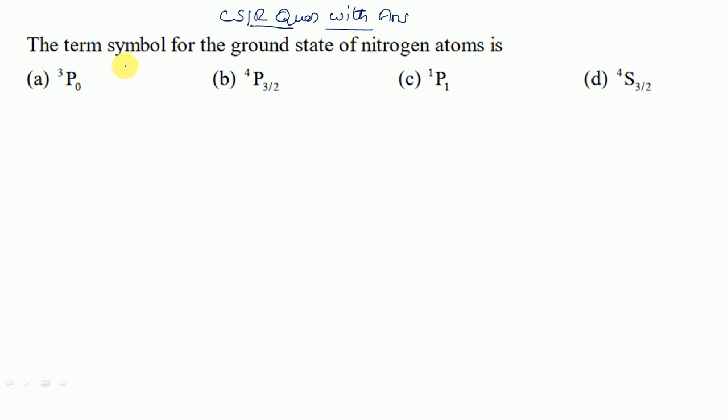So what is the question? The term symbol for the ground state of nitrogen atom is. Option A: 3P0, Option B: 4P3/2, Option C: 1P1, Option D: 4S3/2.